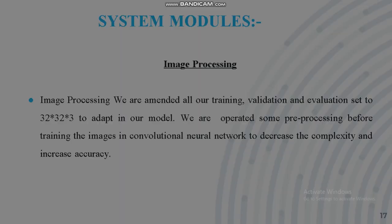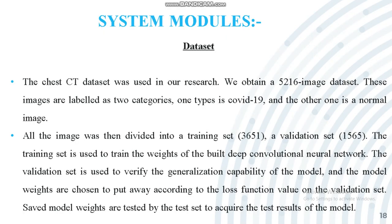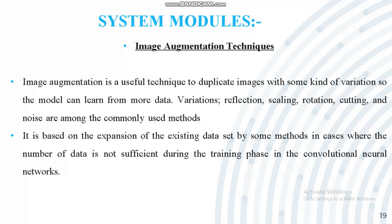For the dataset, we obtained 5,216 image samples. All images were divided into a training set, which is used to train the weights of the deep convolutional neural network, and saved model weights are then tested by the test set to acquire the test results of the model. Image augmentation technique is based on the expansion of the existing dataset by various methods in cases where the number of data samples is not sufficient during the training phase.